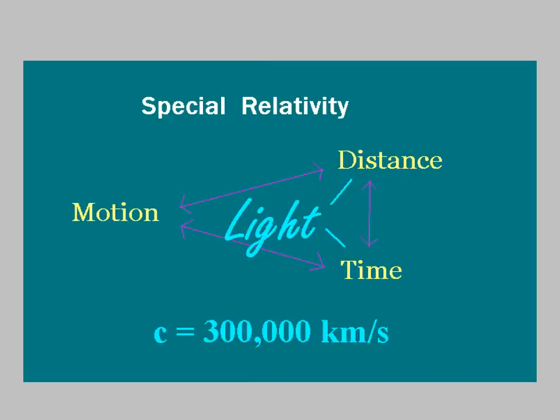So light gives you this constant value, 3 times 10 to the 8th meters per second, or 300,000 kilometers per second, or 186,000 miles per second. And so the speed of light turns out to be constant, no matter what your motion is. Well, this is the basics behind what we call special relativity.